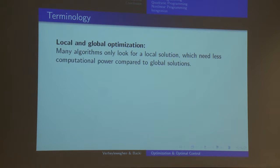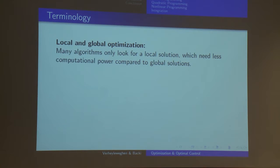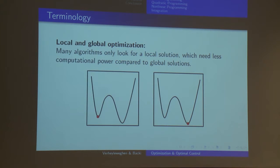Local versus global optimization: many algorithms — including some we use in this talk — only look for local solutions, local minima. That requires less computational power compared to finding global solutions, and is sometimes sufficient for engineering applications. On the plot, we have a local minimum here and a global minimum there for this function.